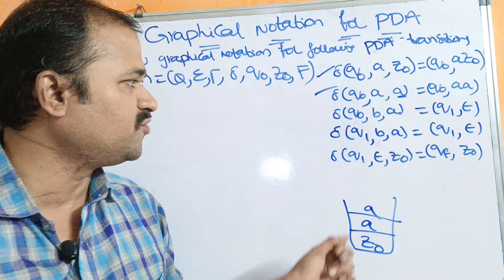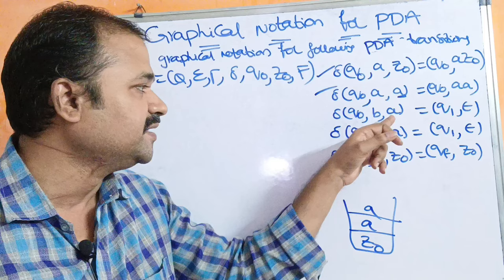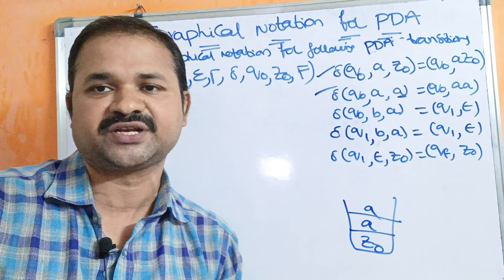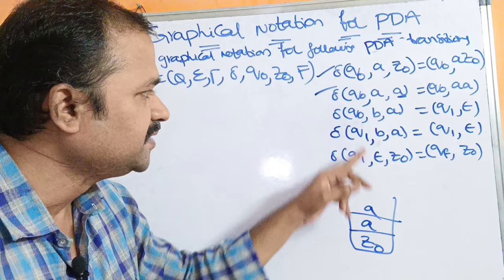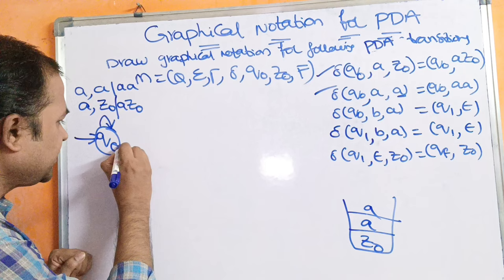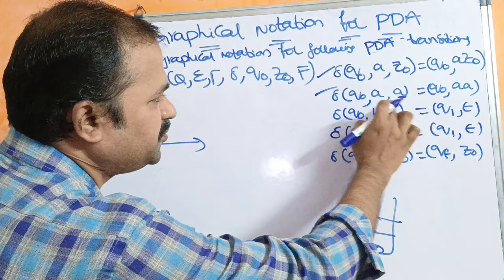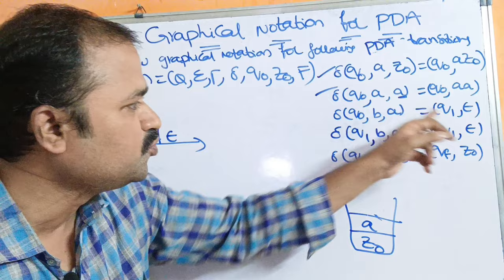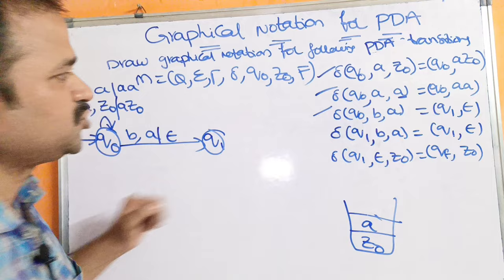Third: if the state is Q0 and we read input symbol B, and the stack's topmost symbol is A, then we have to change the state from Q0 to Q1. Epsilon denotes that we are performing the pop operation. So with input symbol B and stack top A, this A will be popped from the stack and we move from Q0 to Q1. The first two transitions are push operations, while this one is a pop operation.